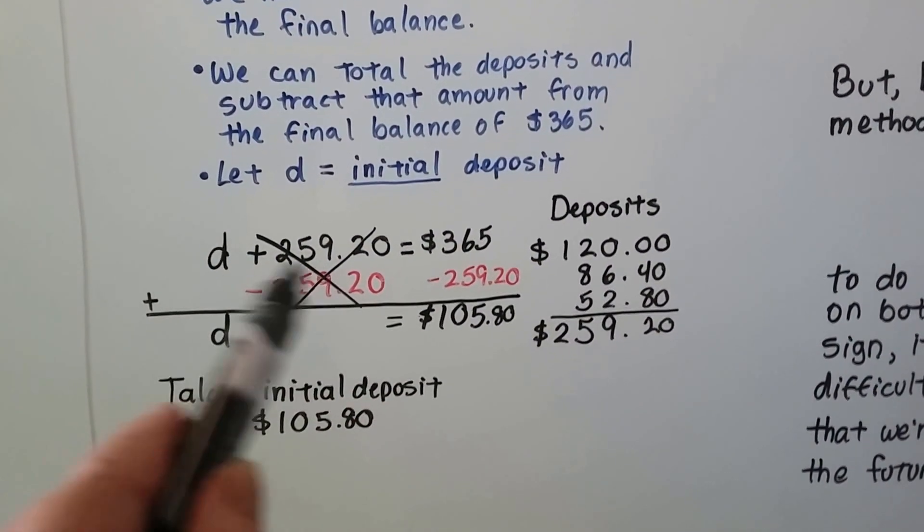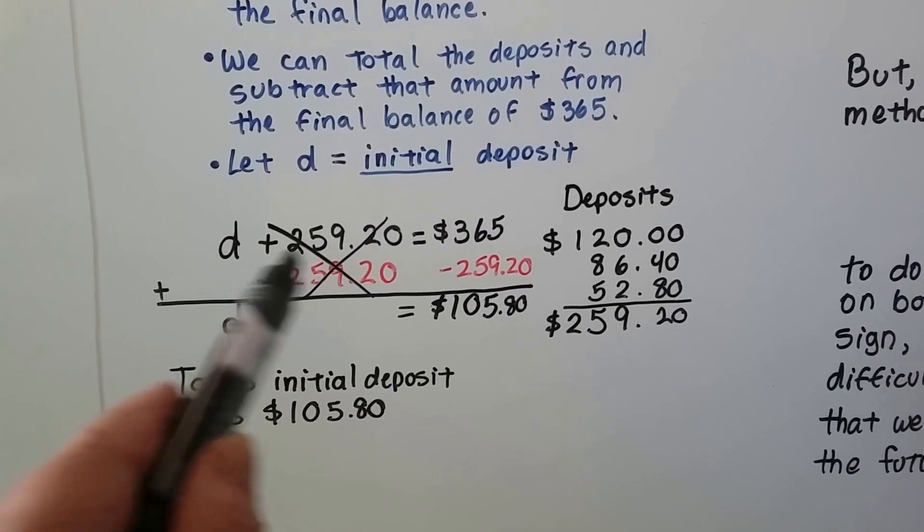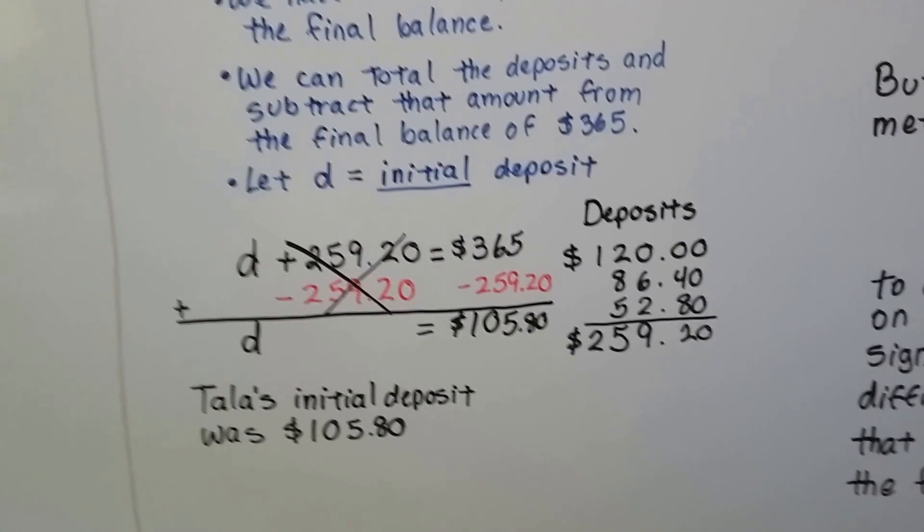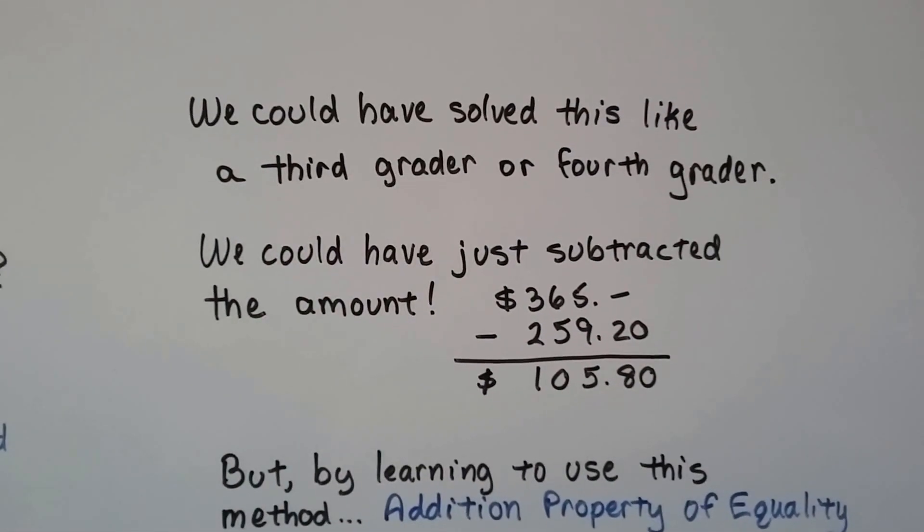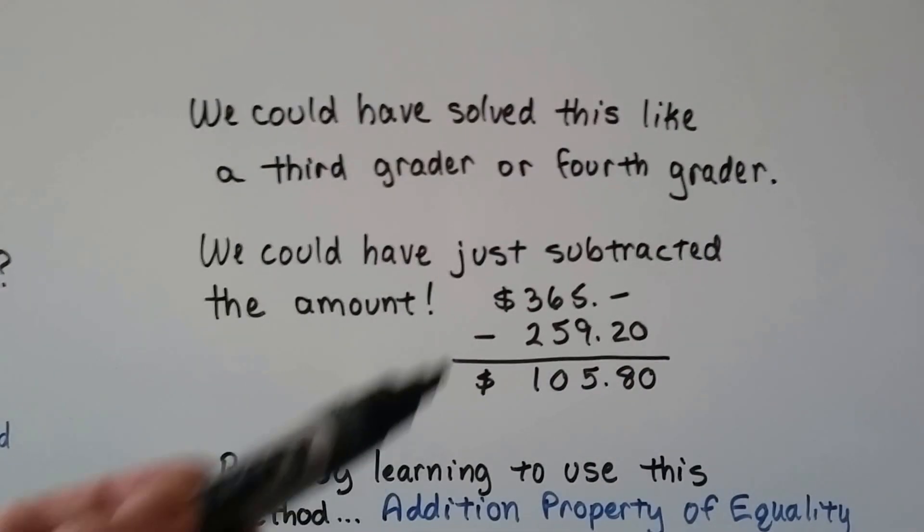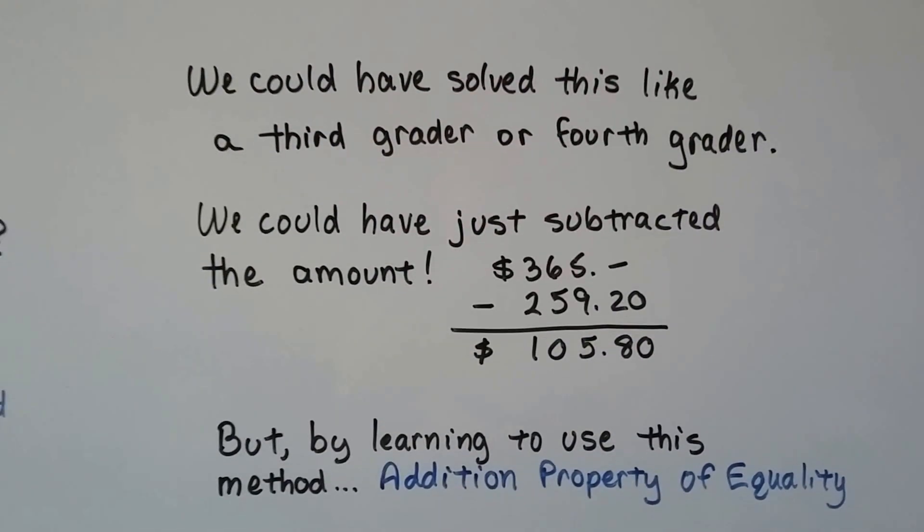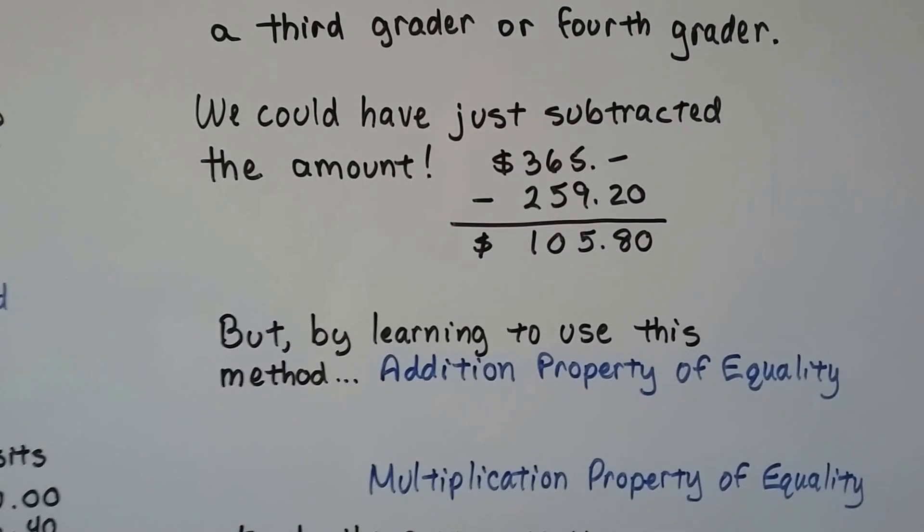Now, I know you're looking at this side and saying, well, we could have just done this. We didn't need to write all of this with the D and everything. We're doing algebra now. We could have solved this like a third grader or a fourth grader, and we could have just subtracted that amount from the 365.